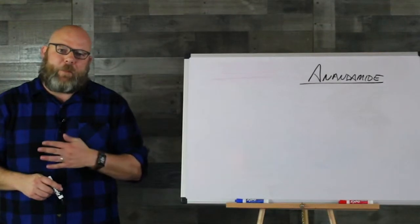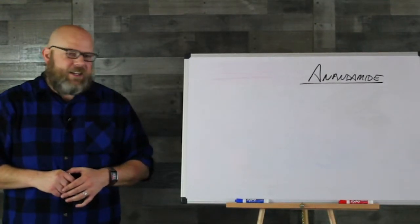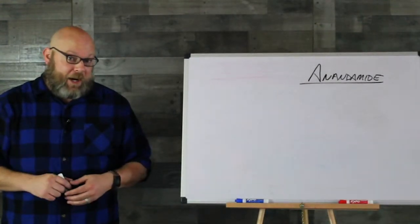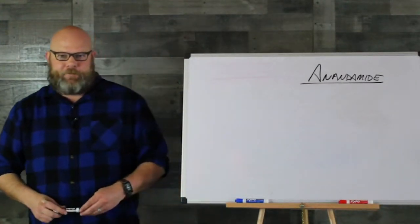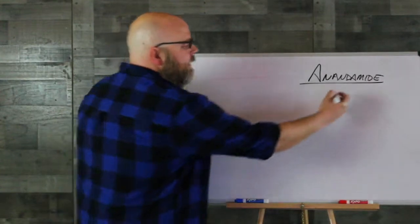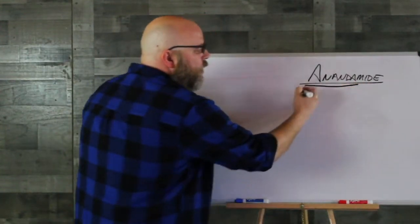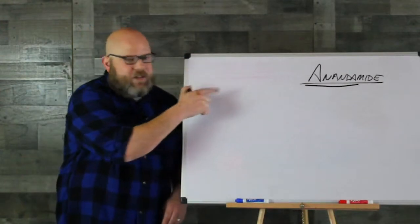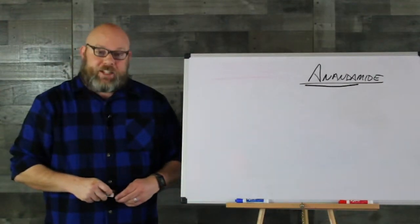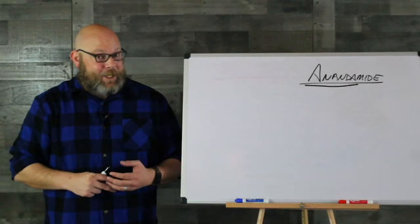So today's weird freaky brain chemical is called anandamide. Ananda is the Sanskrit word for bliss. The guy who discovered this thought that he discovered the bliss molecule, and that makes a lot of sense to me.